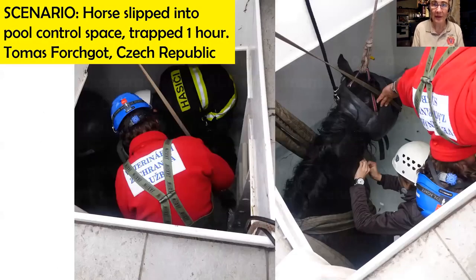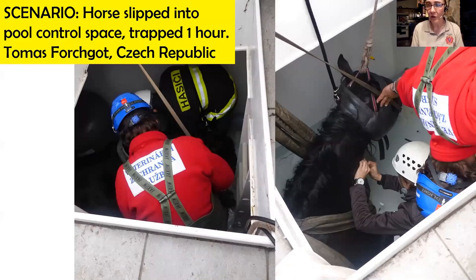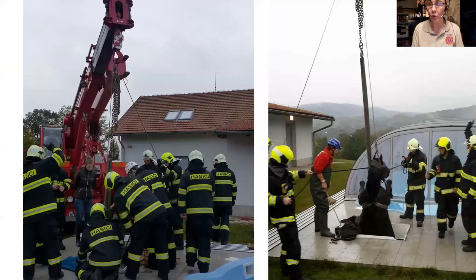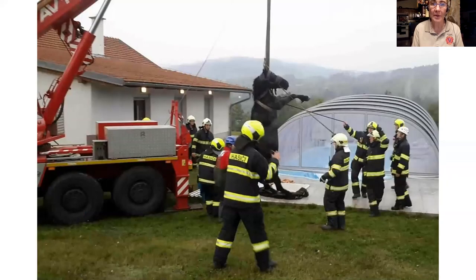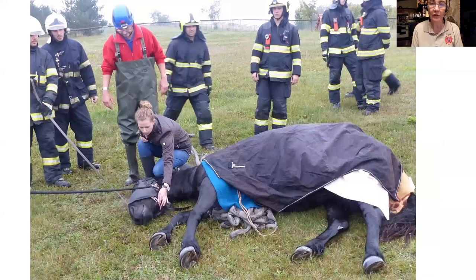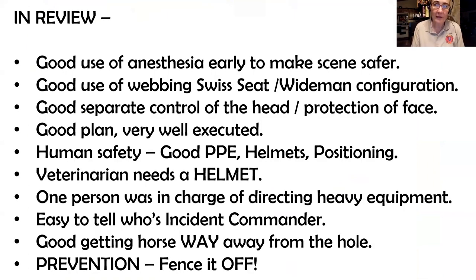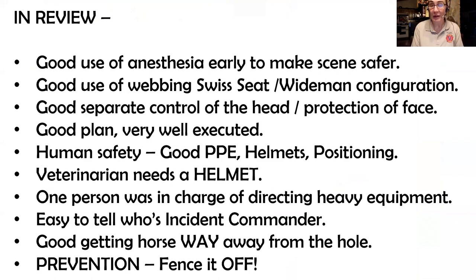Lastly, let's go to the Czech Republic. This is Tomas and his team — a horse went down into a pool and they had to do a vertical lift out of the pool area. Beautifully done rescue: nice and safe, everybody in PPE, the right heavy equipment. The only person without PPE is the veterinarian — please, veterinarians, just put on a helmet. Great separate control of the head, executed the plan beautifully, human safety was good. You can always tell when it's a good rescue because it's easy to identify the incident commander. Prevention: if you don't have it fenced off, they will find it.